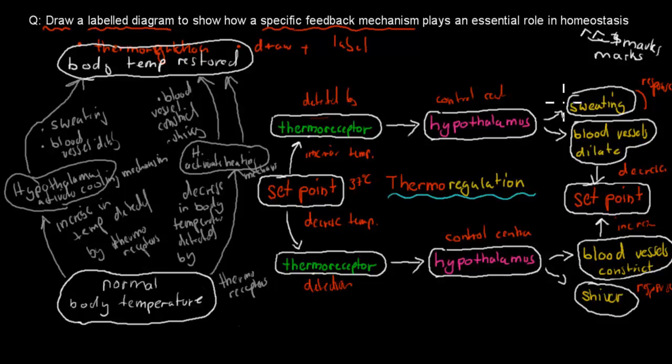So this whole thing was worth four marks. And you get your marks for correctly identifying that you have your stimulus which is picked up by the receptors. You get marks for the responses. So in the case of too high, sweating and blood vessels dilating, and in the case of it being too low, you have shivering and blood vessels constricting. You also get mechanism points for mentioning the hypothalamus, because it's the thing that activates your cooling. And then you get points for mentioning that it actually returns to normal. Each of these ticks would be a half point, and overall you get your four marks out of four.